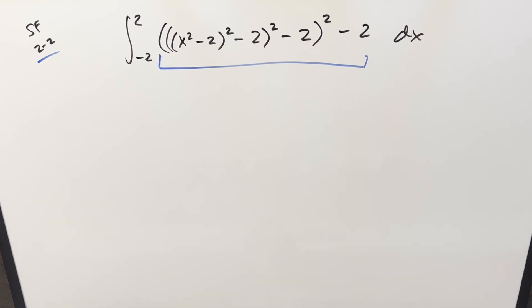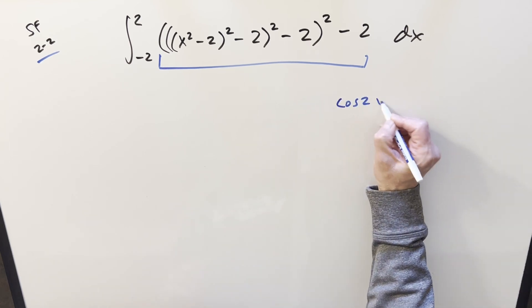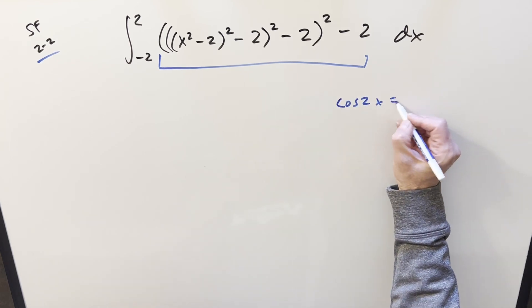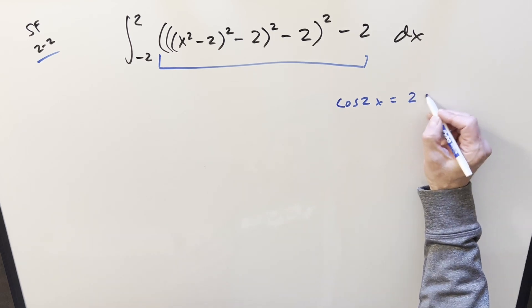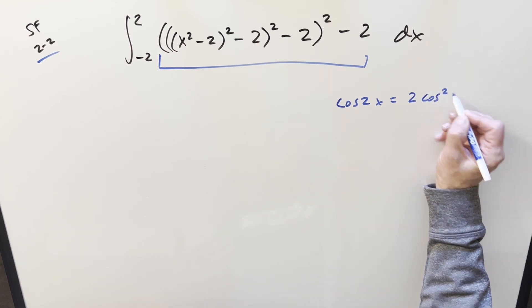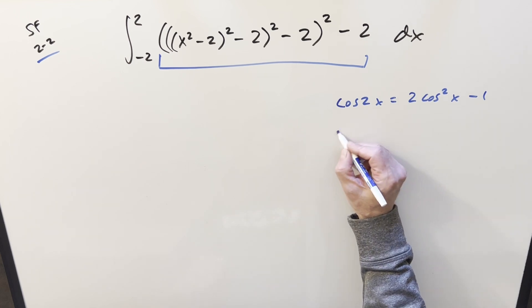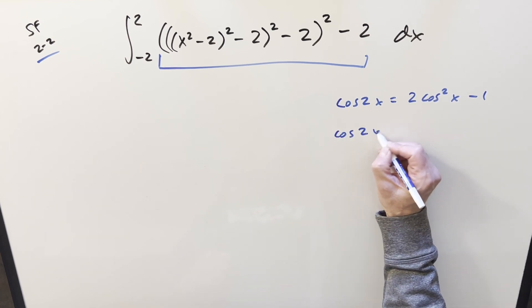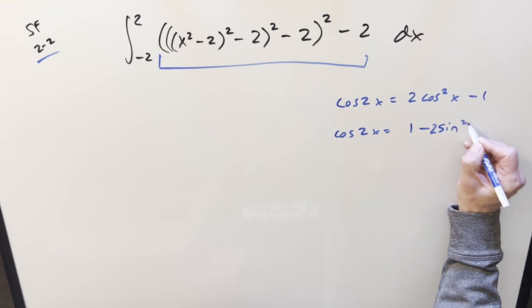So what I want to do instead is look at a couple of trig identities. If we start with cosine 2x, I have three identities for this, but the one I want to think about is two cosine squared x minus one. But actually I want to look at this the other way too — cosine 2x can also be written as one minus two sine squared x.